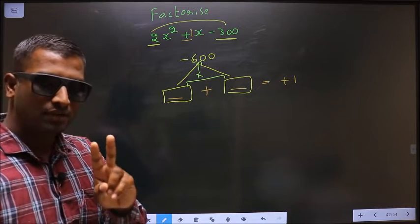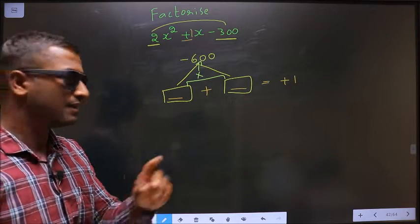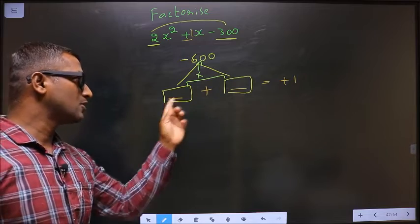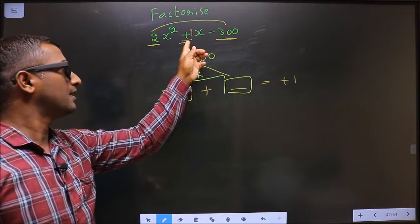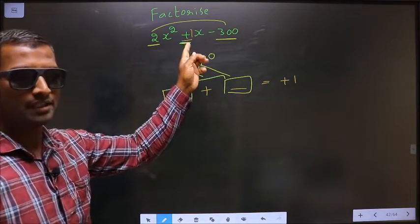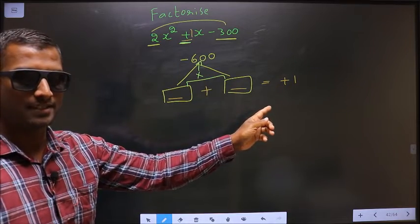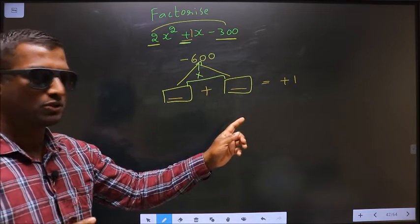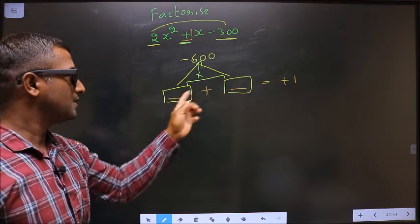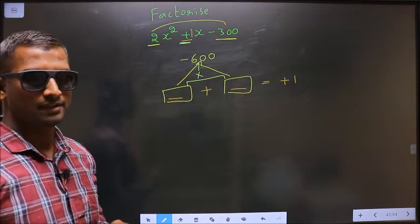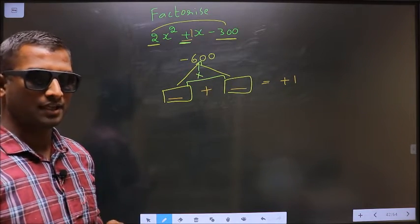Now, look for two numbers such that when you add them, you get the middle term coefficient, which is +1 in this case. And when you multiply them, you should get -600.